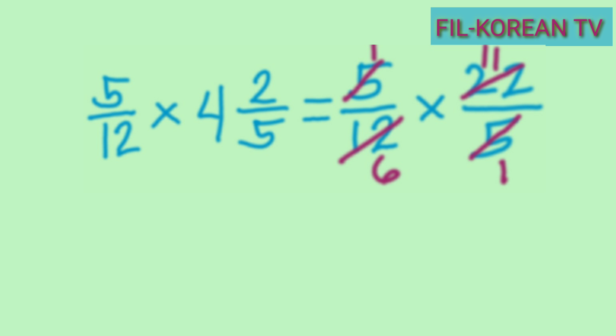Now we multiply the two numerators: one times eleven equals eleven. Then we multiply the two denominators: six times one equals six. The answer is eleven-sixths, which is an improper fraction since eleven is greater than six.